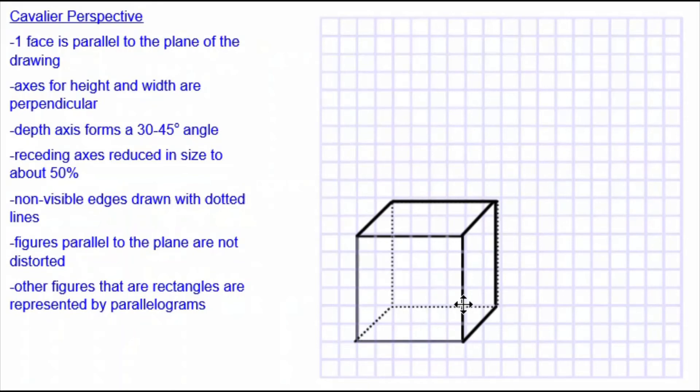The depth axis forms a 30 to 45 degree angle. I chose a 45 degree angle. The receding axes are reduced in size to about 50%. Mine are exactly 50%, 1.5 centimeters instead of 3. The non visible edges are drawn with dotted lines.